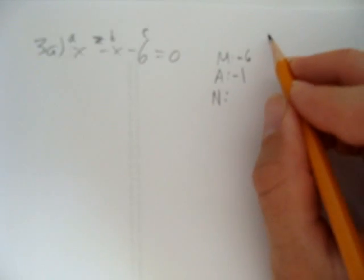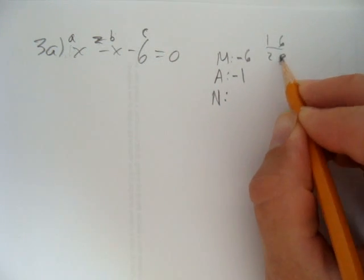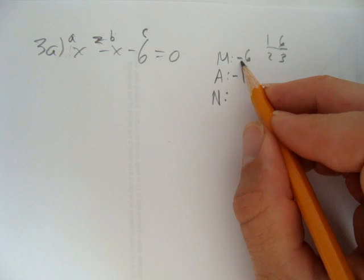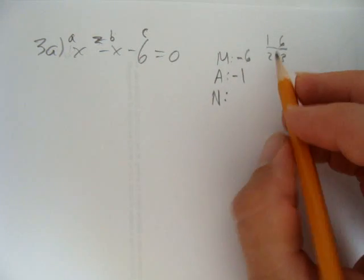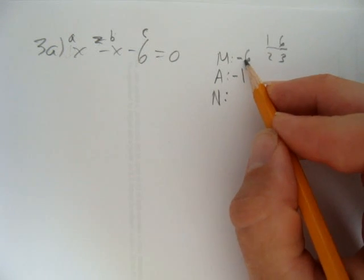Well, there's really only two things that can multiply to 6. It's either 1 and 6 or 2 and 3. But since the multiplication has to come out to be negative, I need to make one of these negative. If they were both negative, the answer would be positive, but it isn't. It's negative.